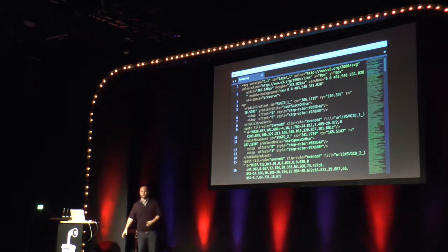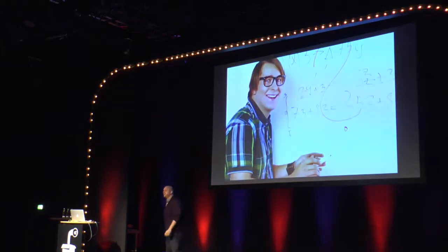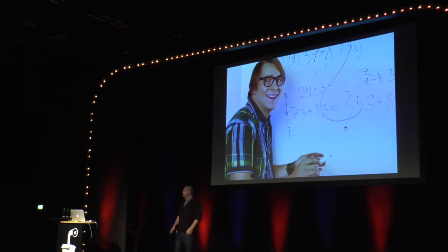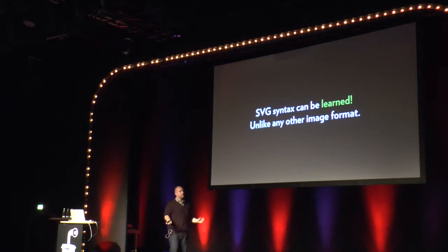If you were to open up horse.svg, you might look at all that stuff and be like, what do I look like, some kind of math nerd? I can't do that stuff. Well, you don't have to learn it. You don't have to learn JPEG, right? You don't ask, how do you make a horse in JPEG? No, you just export as JPEG. What's cool about SVG is that you could learn it if you wanted to — it looks a bit like HTML — but you don't have to.